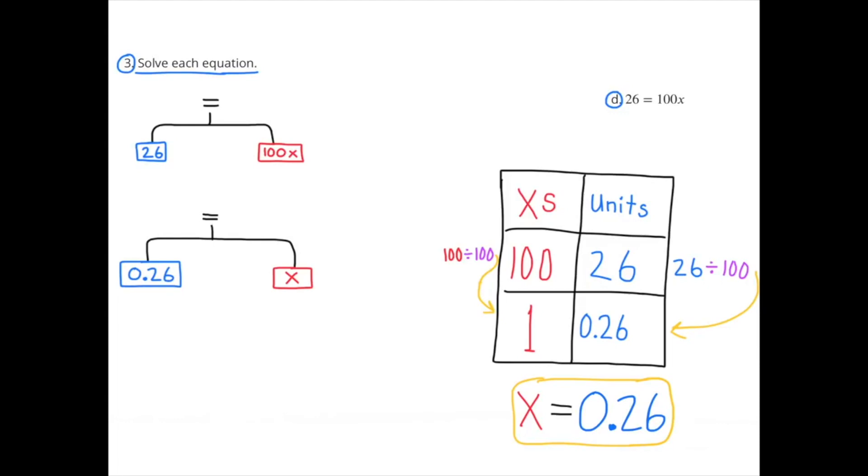X equals 26 hundredths. I also represent this on the left with a hanger. 26 units is in balance with 100 X's. And below it, 26 hundredths units is in balance with 1 X. So X equals 26 hundredths.